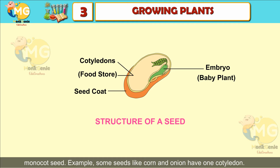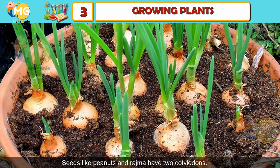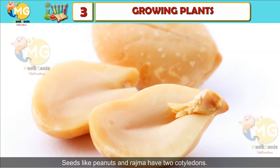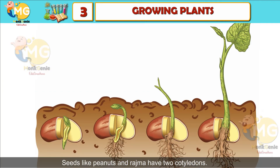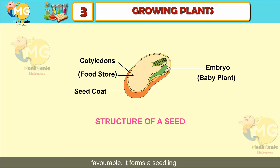Seeds with two cotyledons are called dicot seeds, while seeds with one cotyledon are called monocot seeds. Examples: corn and onion have one cotyledon; seeds like peanuts and rajma have two cotyledons.